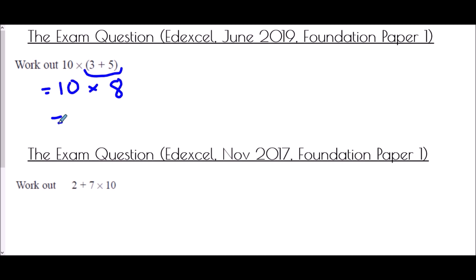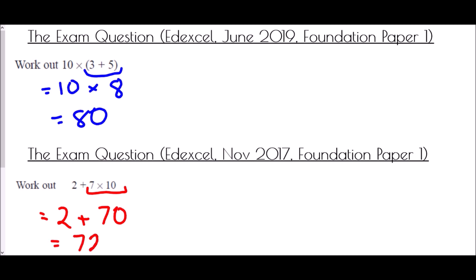From November 2017: we have additions and multiplications within the same expression — another sign to use BIDMAS. Do we have brackets? No. Indices? No. Division or multiplication? Yes — we have 7 × 10. So: 7 × 10 = 70, then the final answer is 2 + 70 = 72.